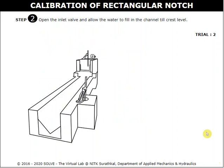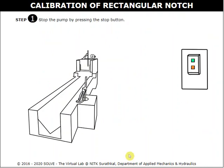Repeat the same procedure for different valve openings. In this experiment, there are seven trials, so I am going to skip the trials. After completing all the trials, click on the red button to stop the pump. Then take the average of the coefficient of discharge of all the trials.